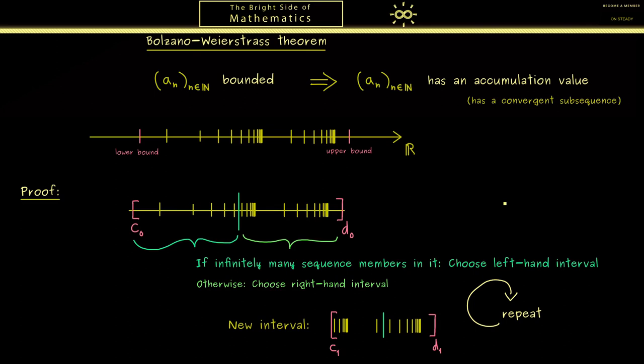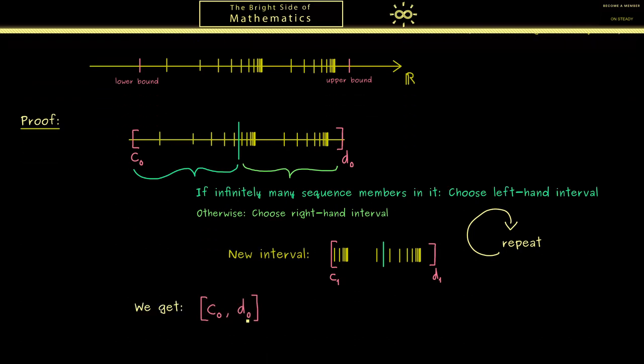Hence what we get in the end are nested intervals. We have our original interval c0 to d0, and the new interval c1 to d1 is a proper subset of this one. And then after repeating the whole process here we get the next interval c2 to d2, which is once again a proper subset of the former interval here.